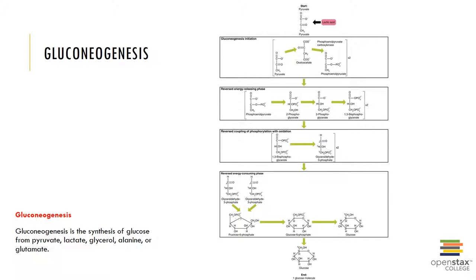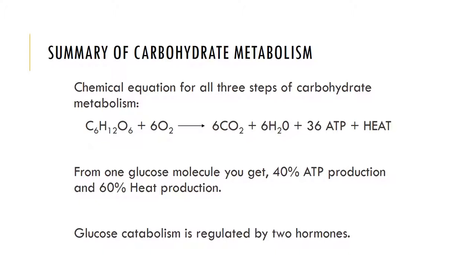Gluconeogenesis is the synthesis of glucose from pyruvate, lactate, glycerol, alanine, or glutamate. Glucose can be synthesized from a number of substrates as shown here. Glucose catabolism is regulated by two hormones: insulin, which is secreted by the beta cells of the islets of Langerhans in the pancreas, and lowers blood sugar levels by stimulating glycogenesis, lipogenesis, and glucose catabolism; and glucagon, secreted by the alpha cells of the islets of Langerhans in the pancreas, which raises blood sugar levels by stimulating glycogenolysis and gluconeogenesis.